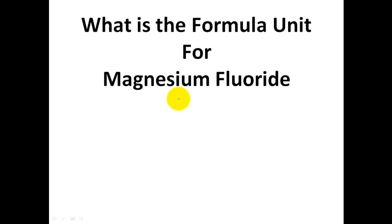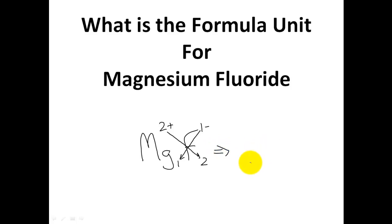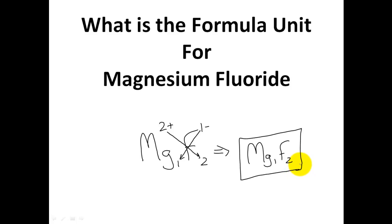What is the formula unit for magnesium fluoride? We're going to learn a new method today called the crisscross, or crossing the charges. Draw the elements magnesium and fluorine and take their charges: magnesium is a 2-plus charge, fluorine is a 1-minus. To determine the formula of magnesium fluoride, cross the numbers — the 1 comes to magnesium, the 2 goes to fluorine. This gives Mg₁F₂. The 1 does not need to be written, so the answer is MgF₂.